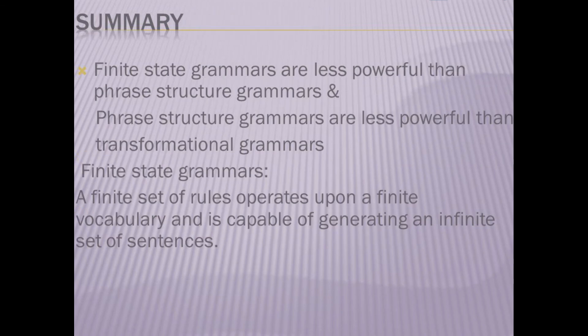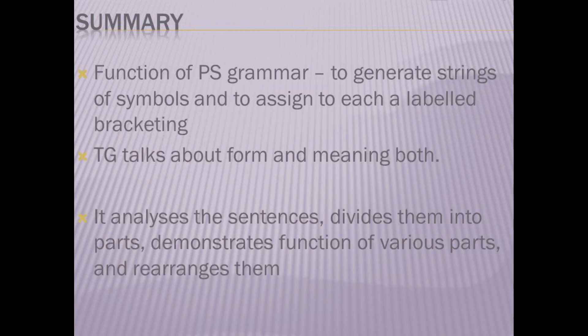Summary: Finite state grammars are less powerful than phrase structure grammars, and phrase structure grammars are less powerful than transformational grammars. Finite state grammars use a finite set of rules on a finite vocabulary to generate an infinite set of sentences. The function of PS grammar is to generate strings of symbols and assign labeled bracketing. TG talks about both form and meaning — it analyzes sentences, divides them into parts, demonstrates the function of various parts, and rearranges them.